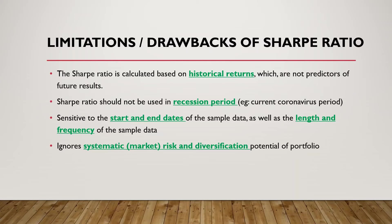Similarly, the Sharpe ratio also ignores diversification effects. For example, suppose you hold a fashion stock like Burberry, which performs well when there is no virus, and you diversify by buying a face mask stock, which performs well during a virus outbreak like SARS or coronavirus. If your portfolio combines these two stocks, you should perform decently regardless of whether there is a virus. However, the Sharpe ratio will not pick up this kind of diversification effect.